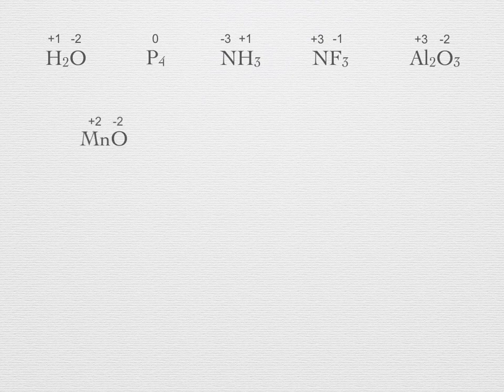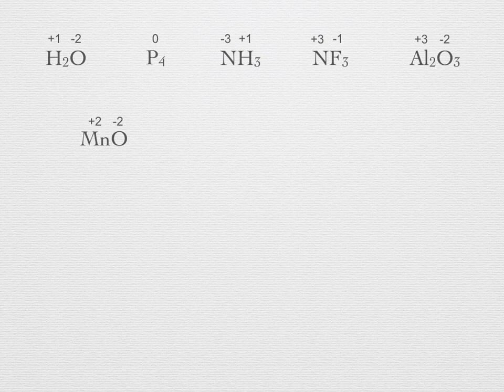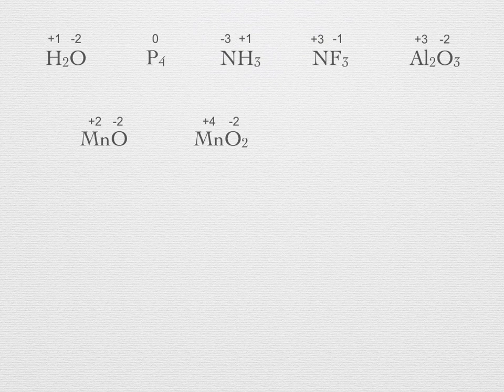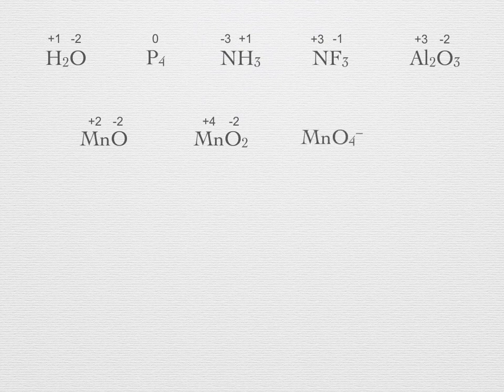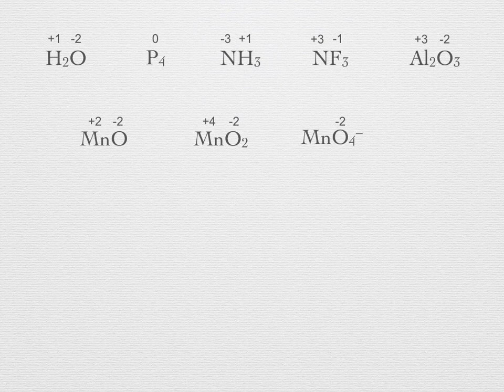MnO. Manganese oxide will have minus two on the oxygen, and therefore plus two on the manganese. MnO2. Manganese dioxide will have minus two on each oxygen, and therefore it needs a plus four on the manganese. MnO4 minus. This is the permanganate ion. It has an overall charge of minus one. Assign minus two to each oxygen atom. There are four of them, so that makes for minus eight. The ion has a minus one charge overall, so we assign plus seven to the manganese ion. These three examples show how a transition metal can have various oxidation states.